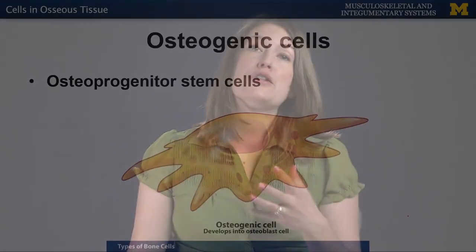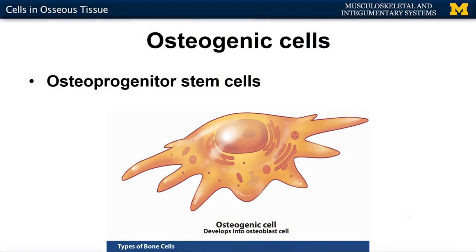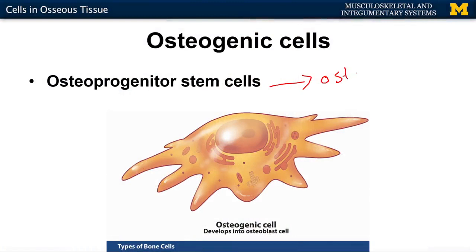There are four cells in the osseous tissue to be aware of. The first are osteogenic cells, which are examples of stem cells. These are found in higher densities associated with the outer surfaces of bone and within the medullary cavity, and they differentiate into osteoblasts.